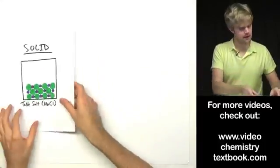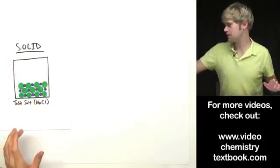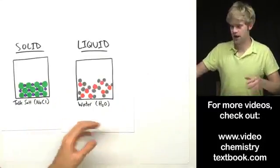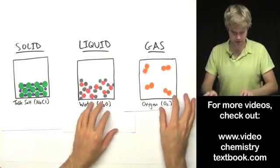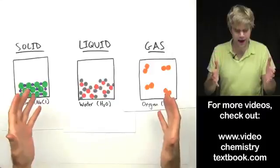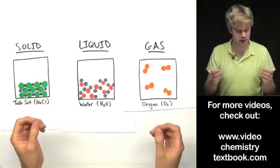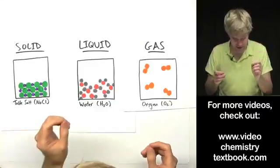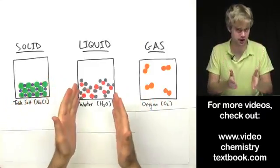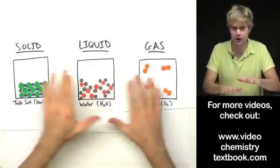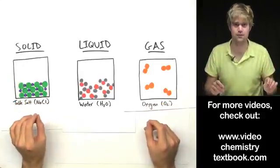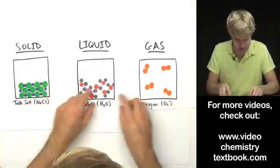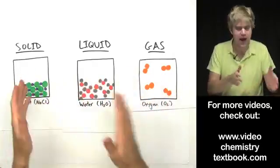Here I've got some drawings. This is table salt, a solid. Here's water, a liquid, and finally oxygen gas. What we're looking at here is what we'd see if we could take these three things and zoom in zillions and zillions and zillions of times. If we could look at these closely enough, we'd be able to see the atoms, these little building blocks that make everything up.